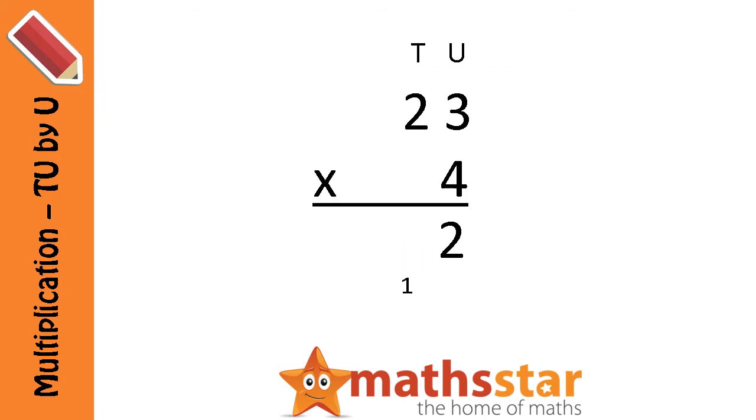So now we can multiply our tens column. So we're going to do 4 times 2. 4 times 2 equals 8. Then we also need to remember the 1 that we carried over. So 8 add 1 equals 9. So we put 9 in our tens column.